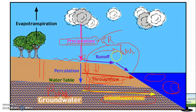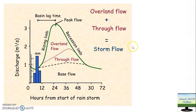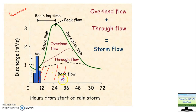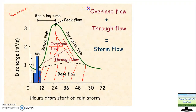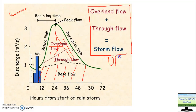If you want to represent all of this in a graph, that is known as the hydrograph. Here you can see how we have represented those things in a graph. Whatever water was going into the stream via deep percolation is known as base flow. The overland flow plus through flow together constitute the direct runoff, also called storm flow or direct runoff hydrograph (DRH).